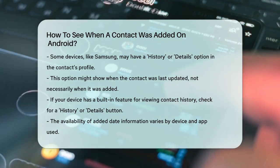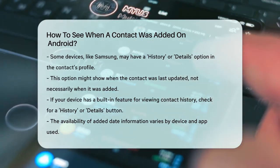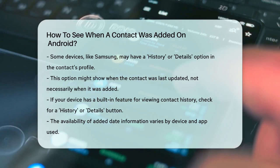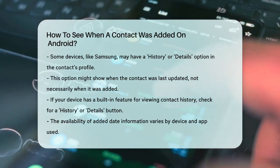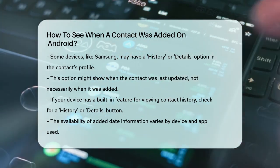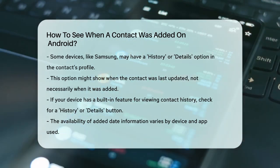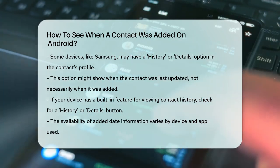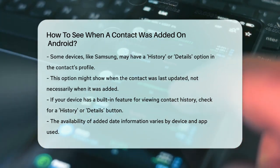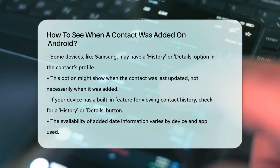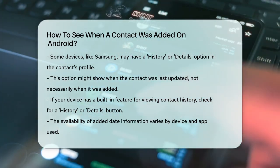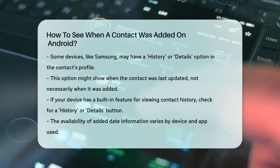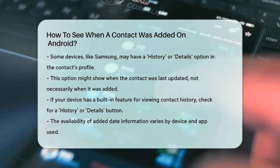In summary, while there's no one-size-fits-all solution, using Google Contacts, third-party apps, or checking your device's Contacts app can help you find out when a contact was added to your Android phone. Just remember, the availability of this information can vary depending on your device and the apps you use.